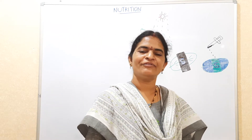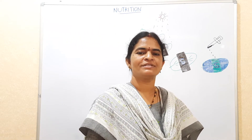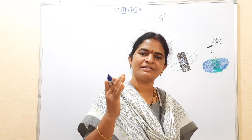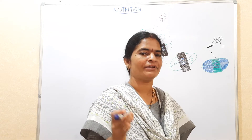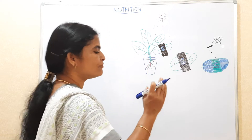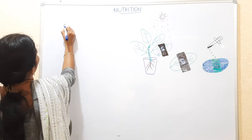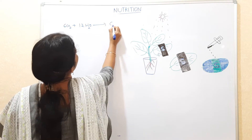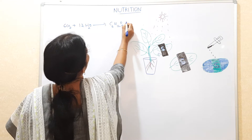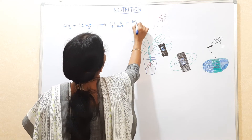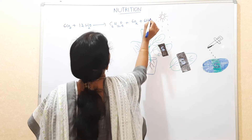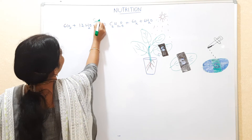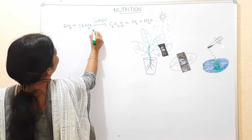In our earlier videos we discussed the photosynthesis process and what components are required. The photosynthesis equation is: 6CO2 plus 12H2O gives C6H12O6 (glucose molecule), 6O2, plus 6H2O, in the presence of sunlight with the help of the green color pigment chlorophyll.